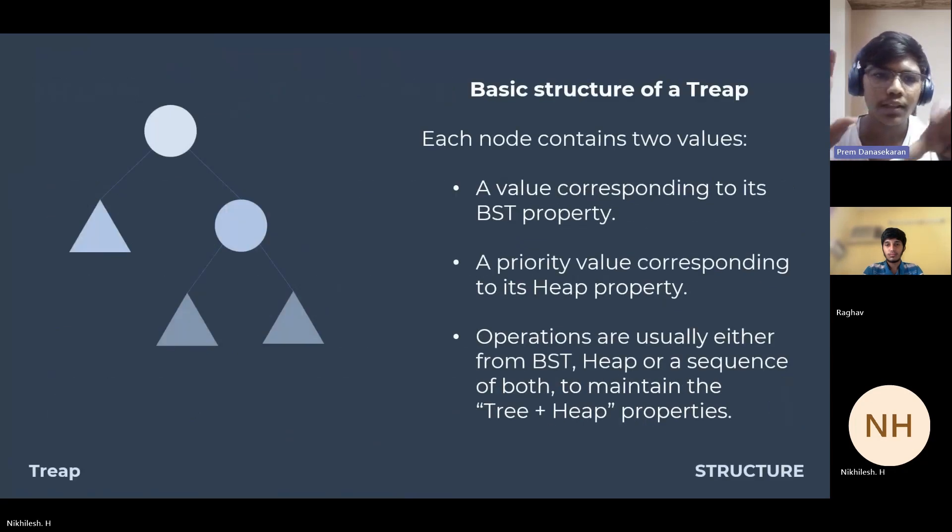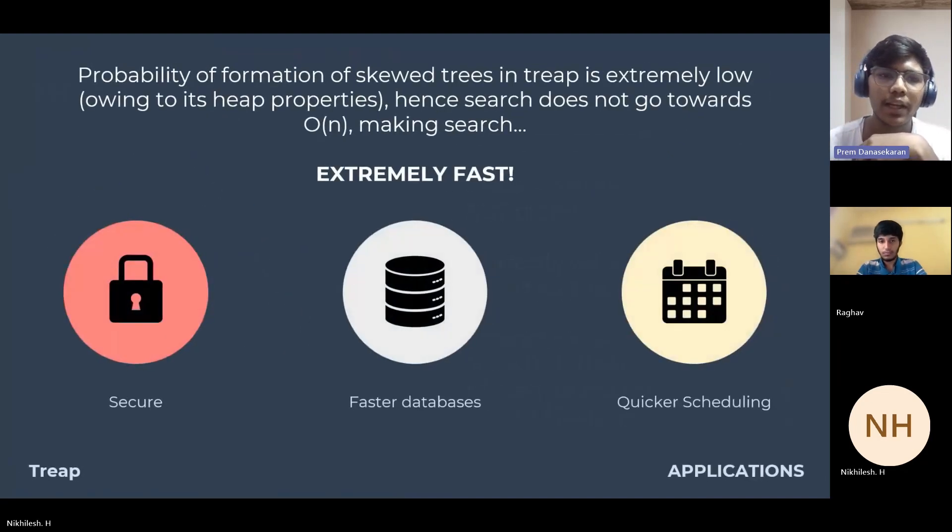Each item has a number and a priority. The number corresponds to the binary search tree property and priority value is used to check for the heap property. Treaps can find diverse applications. They are secure and useful in databases as they have fast search, insertion, and deletion. In quicker scheduling, like in the gaming industry, they are effective in managing game queues and matchmaking, organizing players based on levels or ratings, ensuring fair and swift matchmaking.